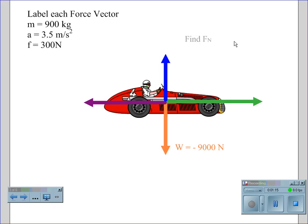We would then use the weight to find the normal force. In this case, because there is only one downward force, the normal force would become 9,000 newtons, positive because it is going up.